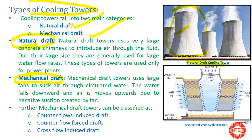Mechanical draft cooling towers are found extensively in pharma, steel, and many power plant industries. The basic difference between natural draft and mechanical draft is that in mechanical draft, a fan is installed — either at the top or bottom — to introduce air inside the cooling tower. In natural draft, no fan is installed; cooling is done by natural means, and the tower height is calculated to achieve the desired inlet and outlet temperatures.